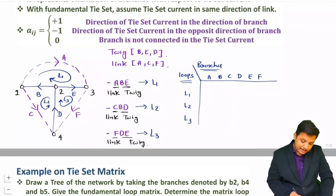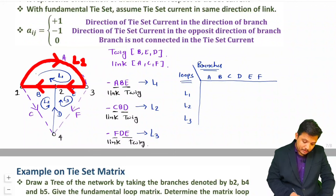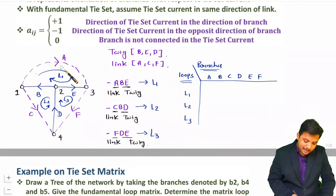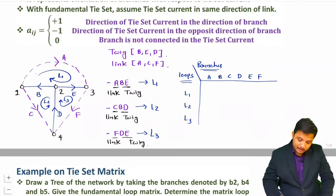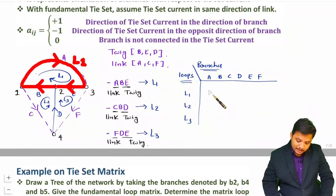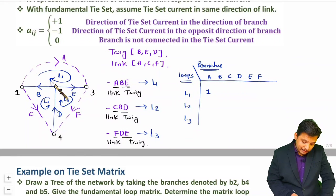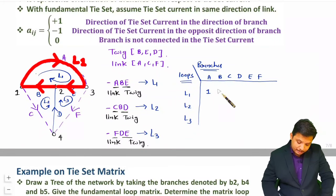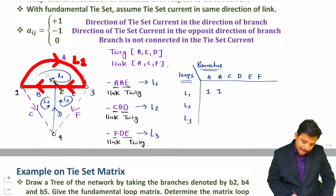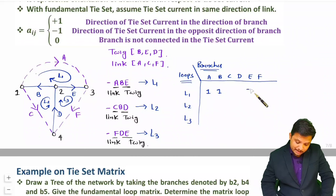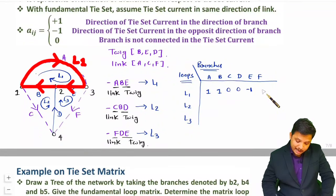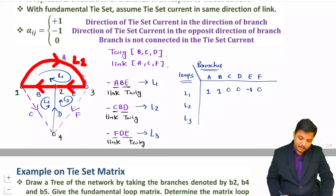For L1: L1 is in the direction of A, so A gets plus 1. L1 is in the direction of B, so B gets plus 1. L1 is in the opposite direction of E, so E gets minus 1. Branches C, D, and F are not connected with L1, so those are 0.